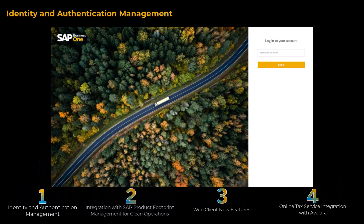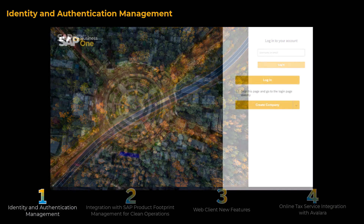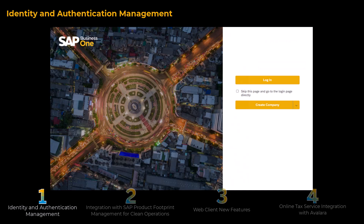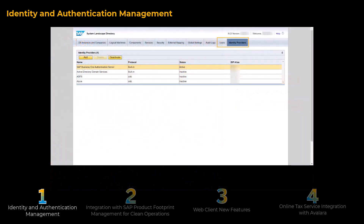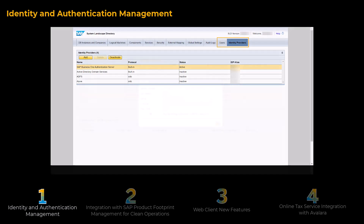SAP Business One now supports identity and authentication management. An identity provider is a trusted provider that lets you use single sign-on to access other websites. Single sign-on enhances usability by reducing password fatigue, because you no longer need to remember an excessive number of passwords. It also provides better security by decreasing the potential attack surface. You can configure identity providers and user bindings from the SAP Business One System Landscape Directory Control Center.